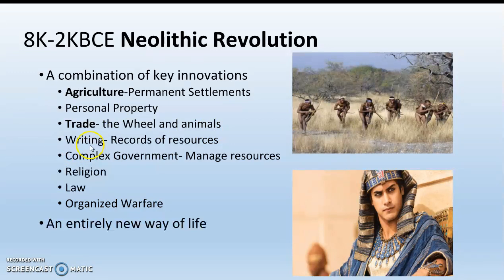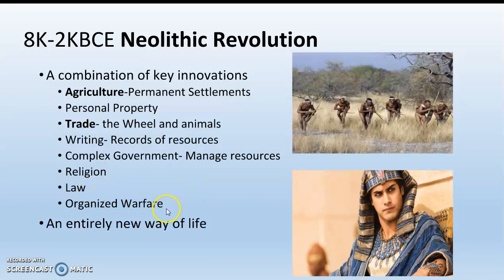We have the creation of writing — the first time people write things down, making symbols that represent sounds or ideas. The big reason writing is invented is to keep track of resources, like how many pounds of wheat you have grown. We also have the introduction of complex government — kings, and under kings we have priests and nobles, and under them traders, slaves, farmers, and others — complex government forming to manage all these resources. We've got the introduction of religion, the first laws, and organized warfare. This is an entirely new way of life.